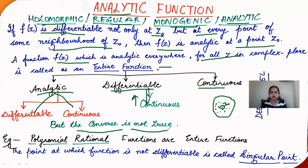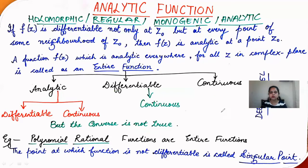Examples of entire functions include polynomial and rational functions. The point at which a function is not differentiable — that is, where the function tends to infinity or gives an infinite result — is called a singularity point. If a function has a singularity point, it is not differentiable and hence not analytic at that point.